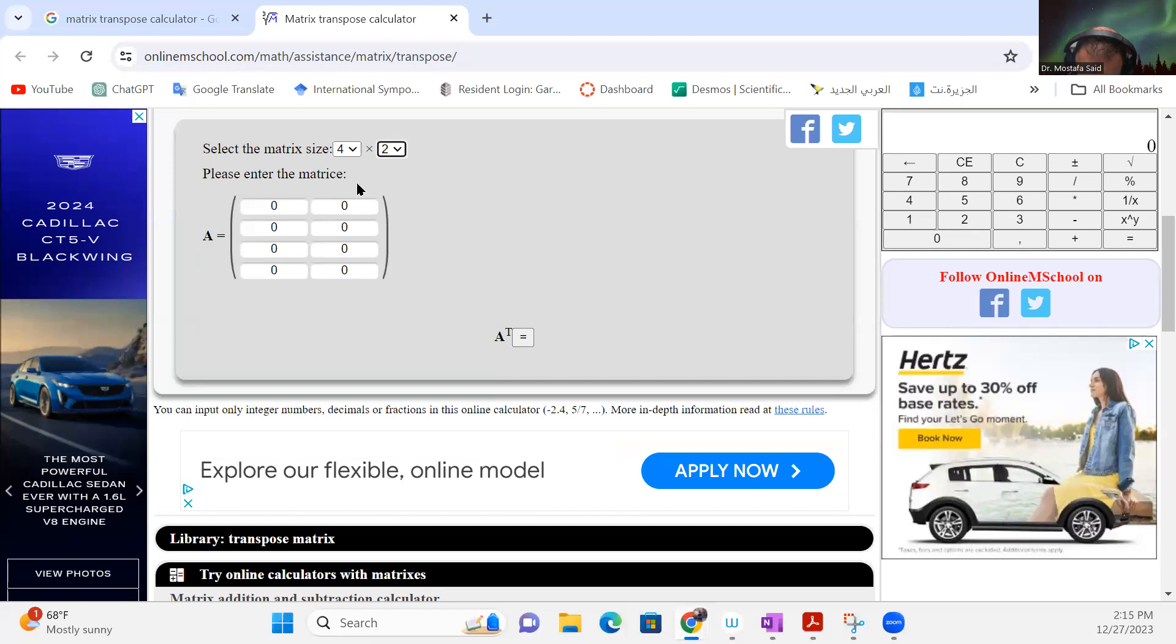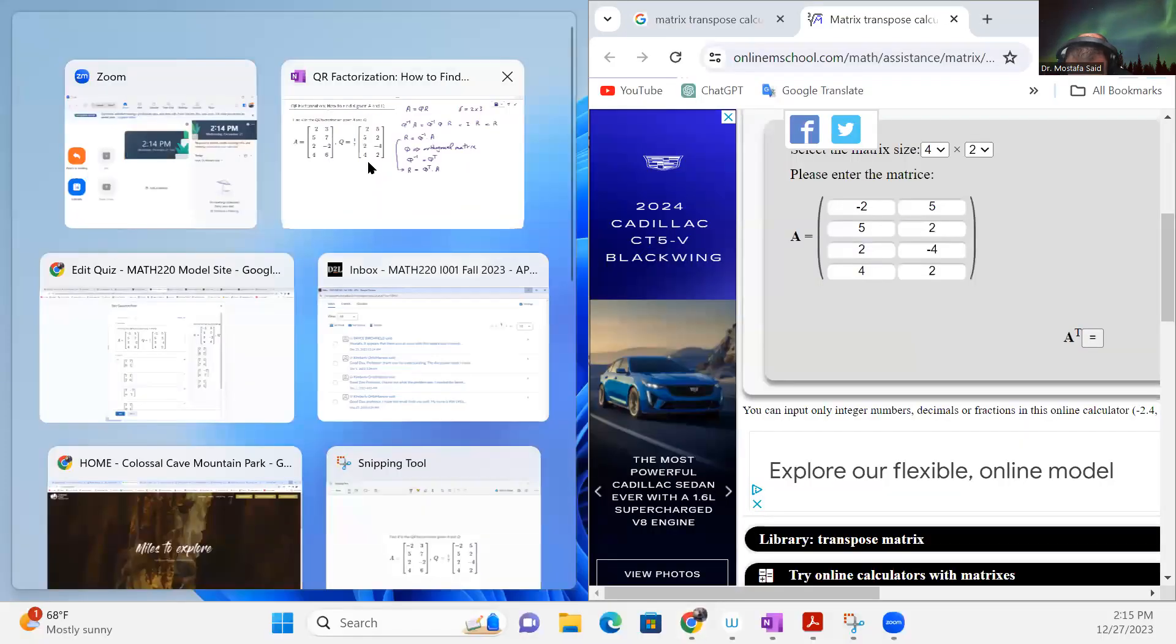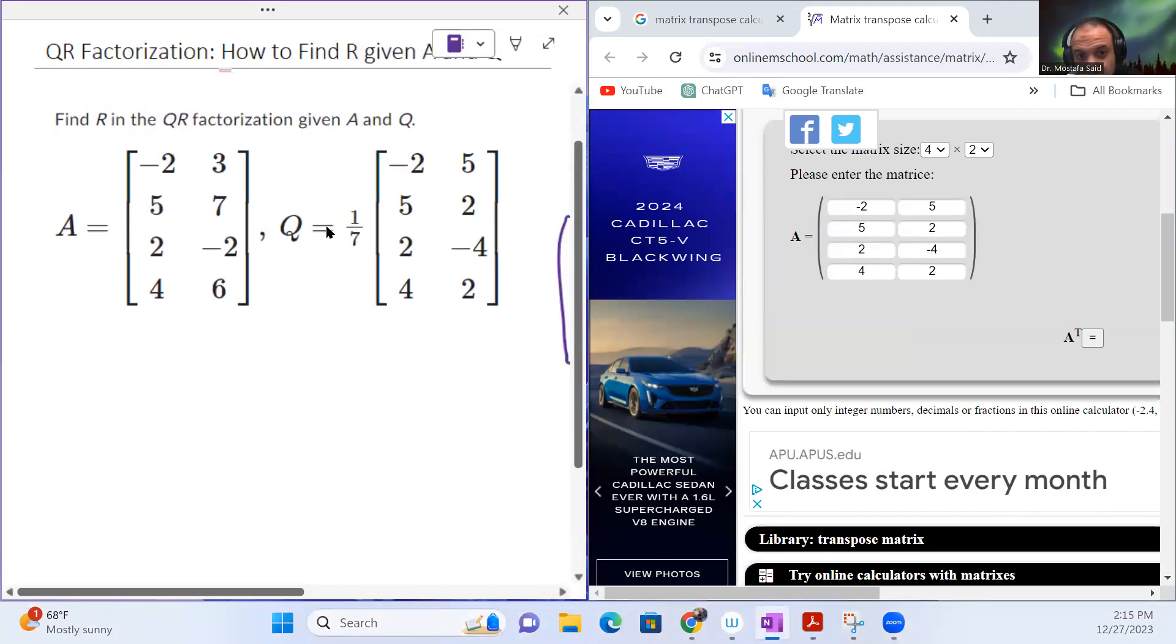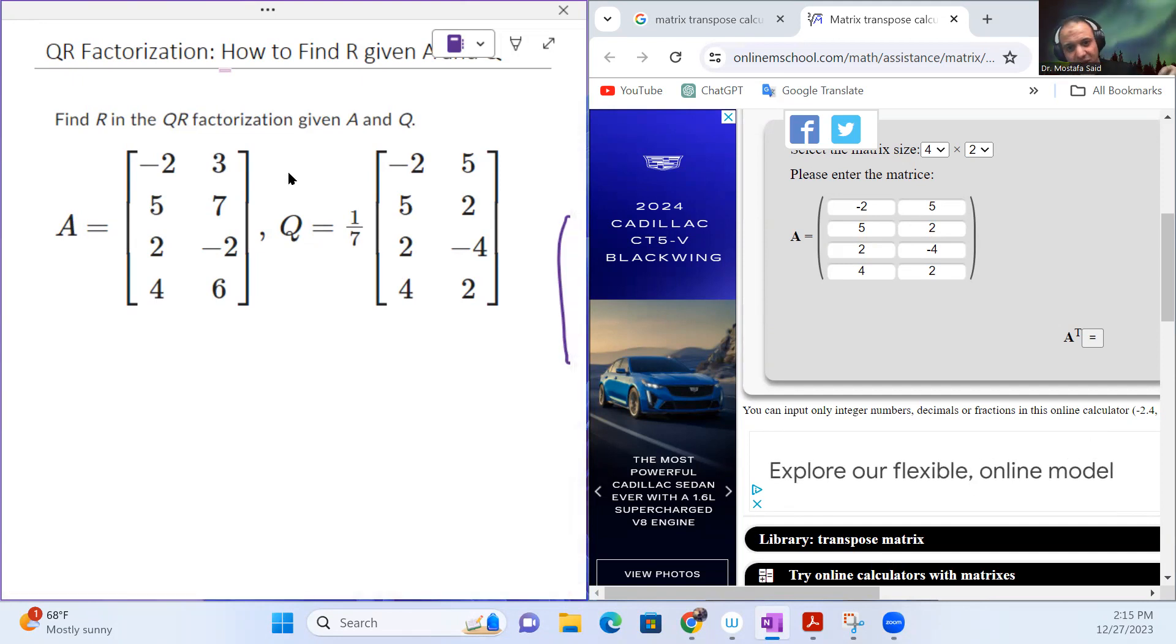So it's minus 2, minus 2, 5, 2, 4. And the second column is 5, 2, minus 4, and 2. I'm going to leave here - of course the matrix Q has one-third here. I'm going to leave this to the end. So it's okay to solve that, and just at the end you multiply by this one-third.